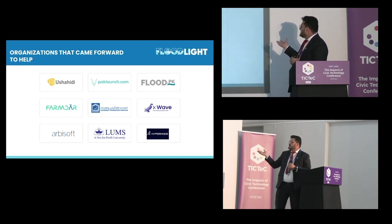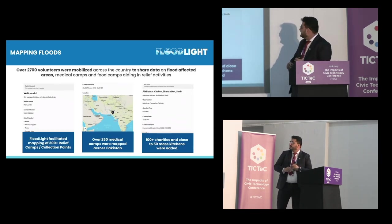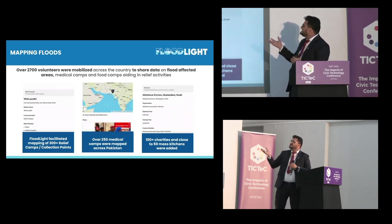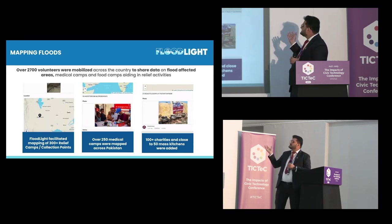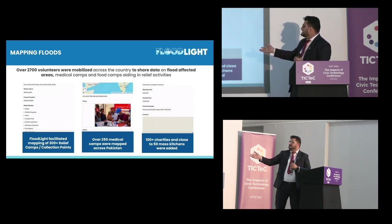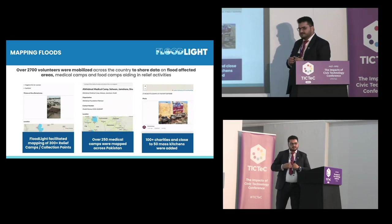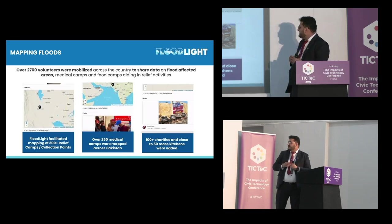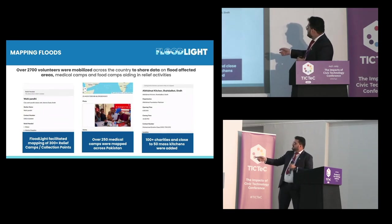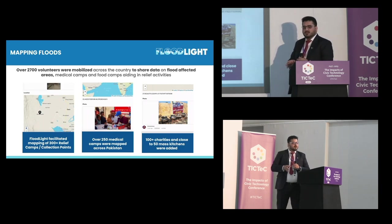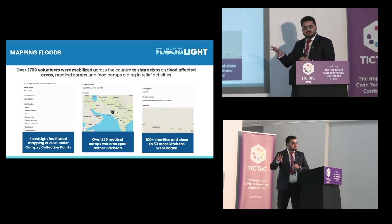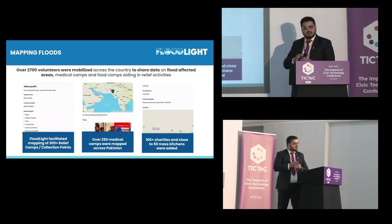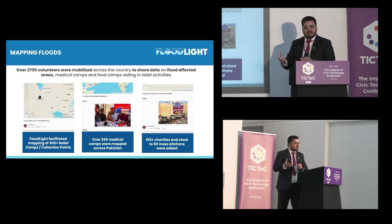We had other technical partner organizations as well. Through all of this, we were able to mobilize over 2,700 volunteers who provided us data. With their help, we mapped around 300 relief camps and relief collection points, over 200 medical camps, and had a list of over 100 charities mapped by location based on where they were focusing. We also had all the mass kitchens listed on the map so people could find them easily.